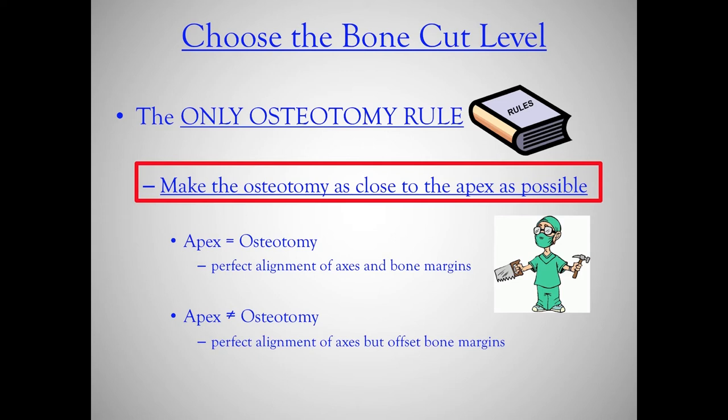You must remember: if your osteotomy is at the apex, you're going to have perfect alignment of both the axes and the bone margins. If your apex and osteotomy are not at the same level, you can still get perfect alignment of the axes, but your bone margins will be offset. Sometimes this is necessary — called obligatory translation — and it can be acceptable or not acceptable depending on your analysis and plan.